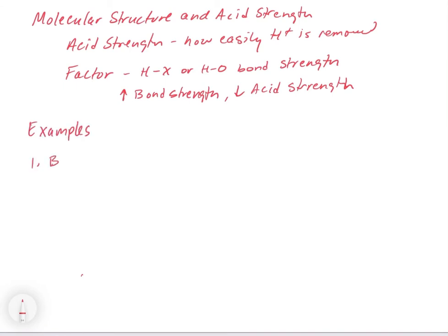Our first major example is binary acids, and this is going to resemble periodic trends quite a bit. Examples would be HCl, H₂O, HF, or NH₃ — all of these have two elements, with the H directly connected to another element. We're going to analyze these in terms of what happens as we go down a group and what happens as we go across a period.